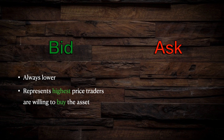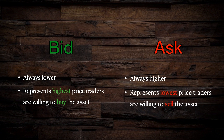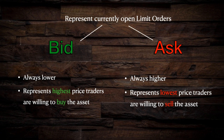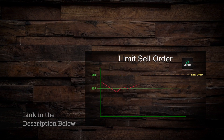The bid will always be the lower of the two and represents the highest price at which traders are currently willing to buy the stock. The ask, on the other hand, will always be higher than the bid and is the lowest price at which traders are currently willing to sell the stock. These bid and ask prices represent currently open limit orders in the market. If you are a bit fuzzy on the different types of orders and how they work, just pause this video and go check out my other video on the five different order types.